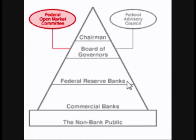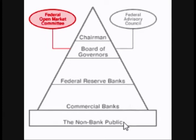The middle level consists of 12 Federal Reserve Banks located throughout the U.S. And the bottom or third level consists of thousands of member banks located throughout the U.S., and the non-bank public — you, me, everybody else.